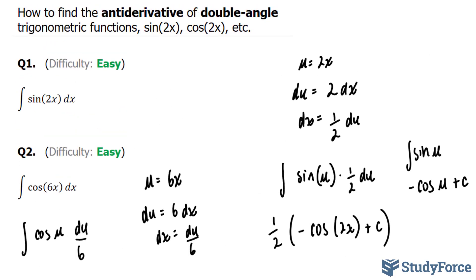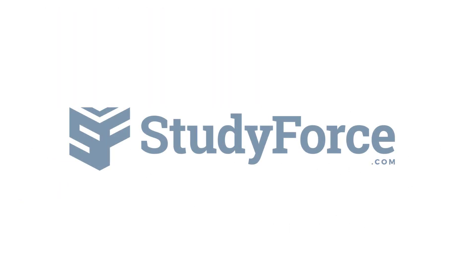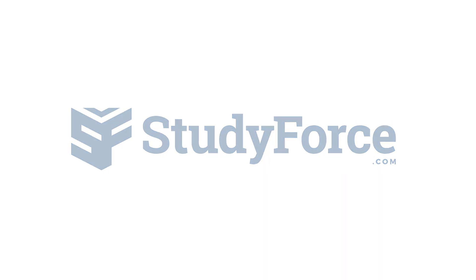And there you have it. Two examples on how to find the antiderivative of double angle trigonometric functions. If you found this tutorial helpful, please support our channel by subscribing or by liking this video. If you have any further questions, visit our website at studyforce.com. We're an online service for students seeking free homework help. See you soon. Thank you.